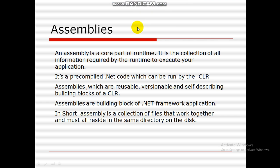Let's discuss assemblies in C#. An assembly is a core part of the runtime. It's a collection of all information required by the runtime to execute your applications. It's pre-compiled .NET code which can be run by the CLR. It is reusable, versionable, and self-describing building blocks of the CLR.